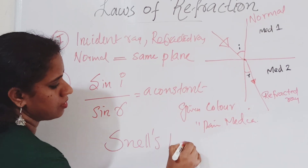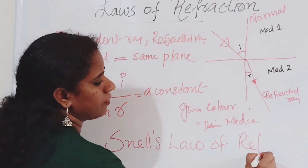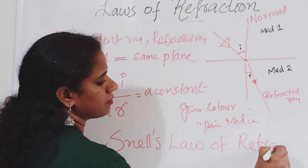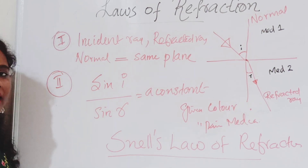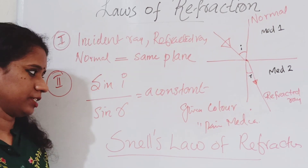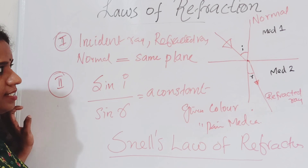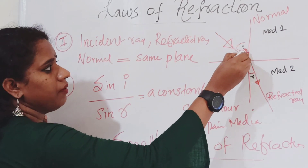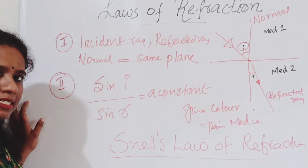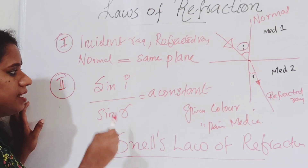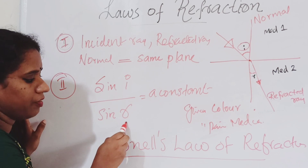This is known as Snell's law of refraction. That is: the sine of the angle of incidence — the angle measured from the normal to the incident ray — to the sine of the angle of refraction is a constant.